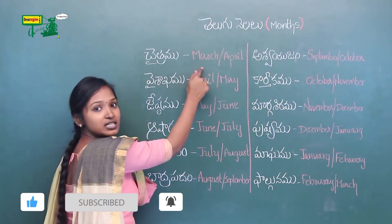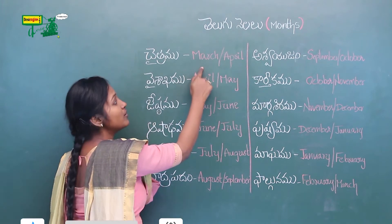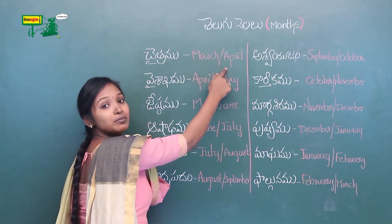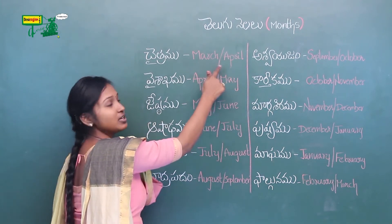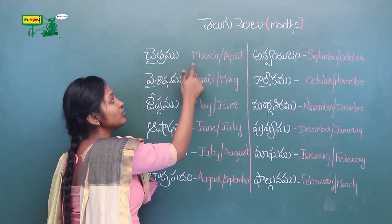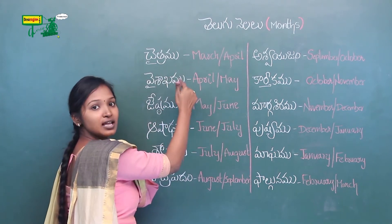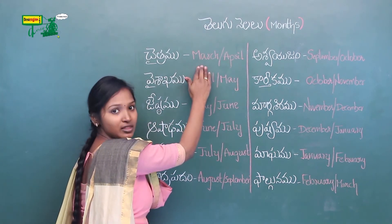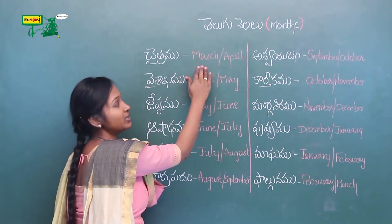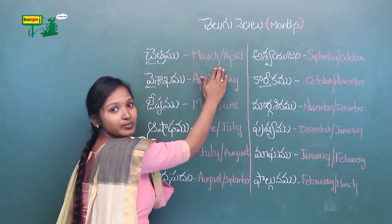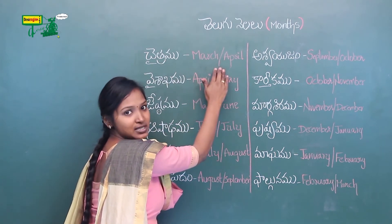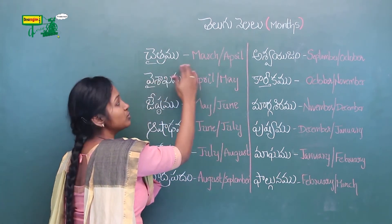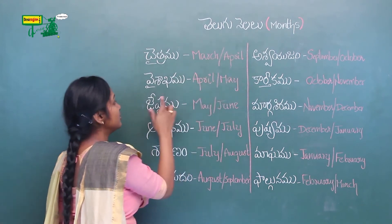In English months, March and April. Chaitramu is the first month. Chaitramu corresponds to March or April.